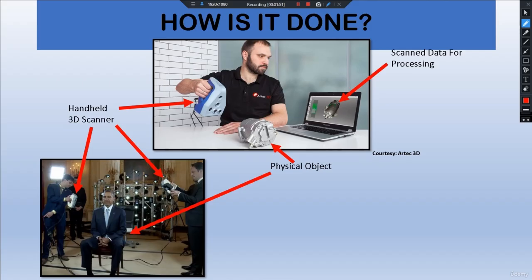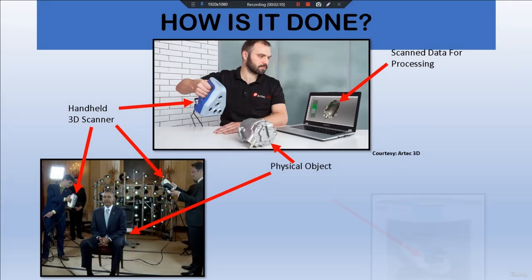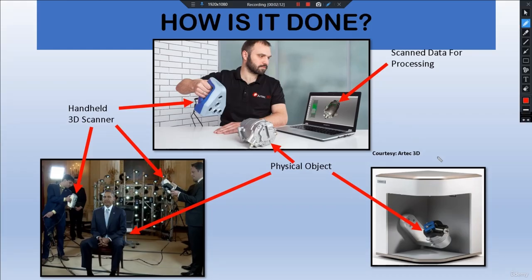Here we see a former US president being scanned using handheld scanners — the human figure acts as the physical object, which means we can also reverse engineer a human body with the aid of CAD software. Here we also see a stationary scanner being used rather than a handheld one, meaning it is not portable, and the physical object is kept in place to be scanned.